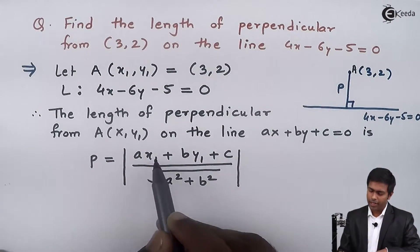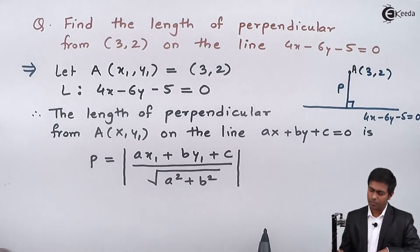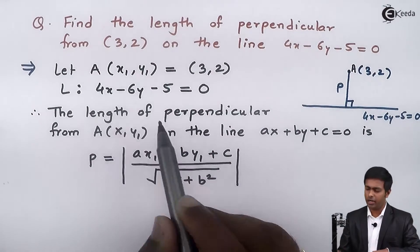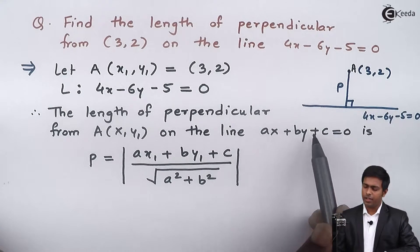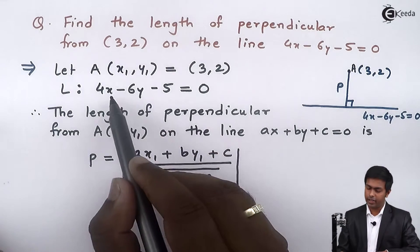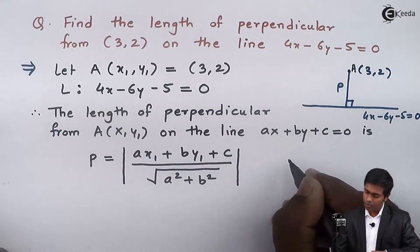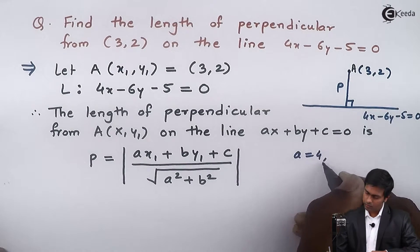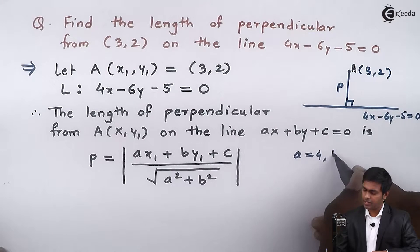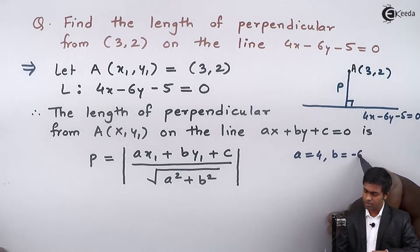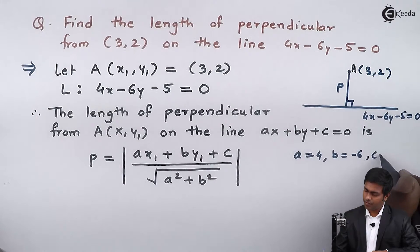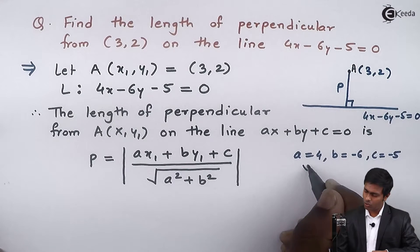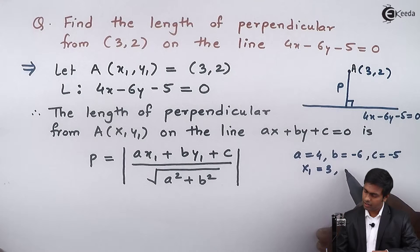Here x1 and y1 are (3, 2) and our line is in the format Ax plus By plus C. By comparing with the equation of the line we get A as 4, B as minus 6, and C as minus 5. Also x1 is equal to 3 and y1 is equal to 2.